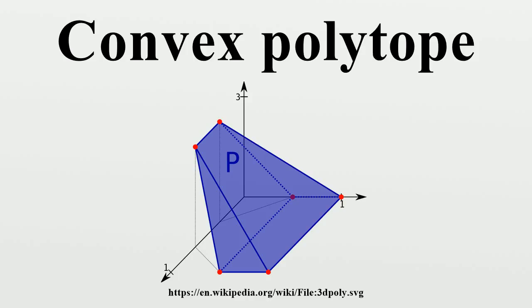The problem of the construction of a V representation is known as the vertex enumeration problem, and the problem of the construction of an H representation is known as the facet enumeration problem.